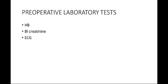Now we will see pre-operative laboratory tests. These consist of hemoglobin, blood creatinine, and renal function tests. Anemia can decrease the effectiveness of beta-blocker therapy in patients undergoing non-cardiac surgery. Therefore, we should rule out anemia. Then, ECG.